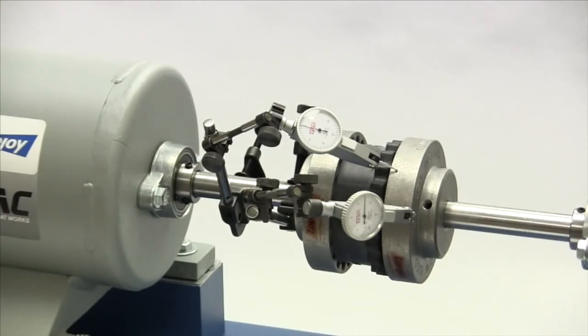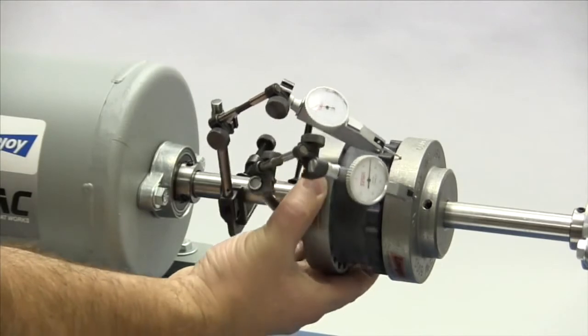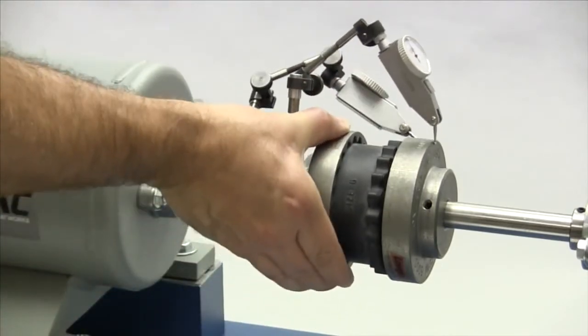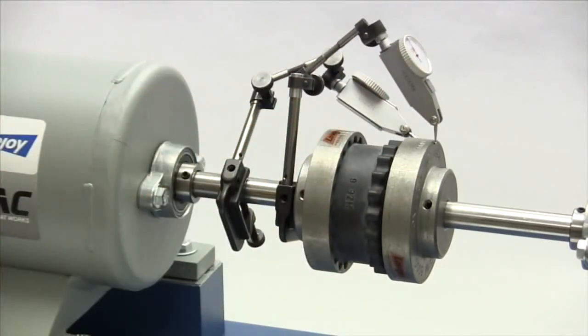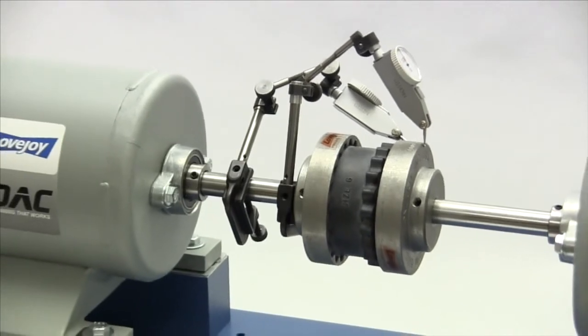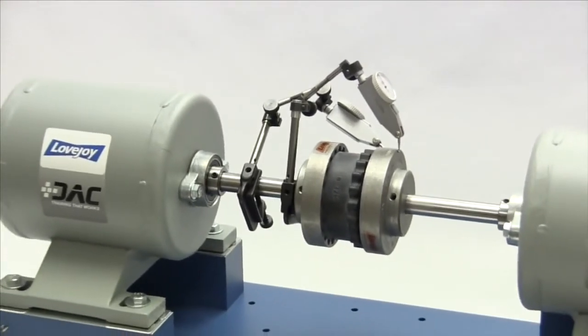If using a dial indicator, mount the indicator on the driver shaft with the sensor touching the flange on the opposite shaft. Rotate the shaft with the indicator to the three o'clock, six o'clock, nine o'clock, and twelve o'clock positions and make notes of the deviation on the dial. If the deviation exceeds the value in the column labeled Angular, adjust the equipment to correct this condition.